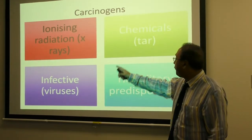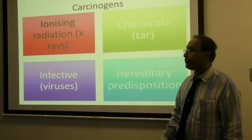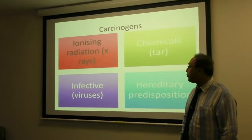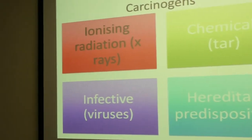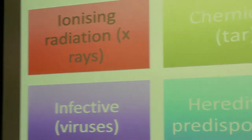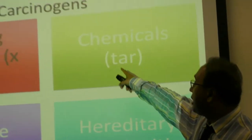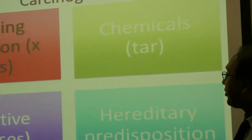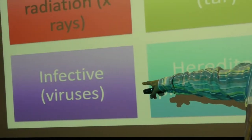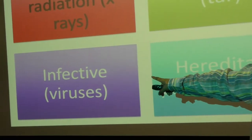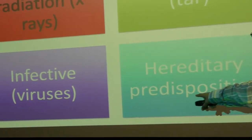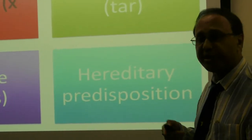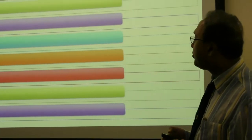I'll put four as a starter. Number one, ionizing radiation — X-rays. Number two, chemicals — and I'll give you an example: tar. Number three, infective viruses. And number four, hereditary predisposition. But let's go into a little bit more detail.